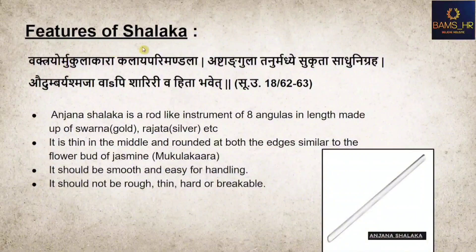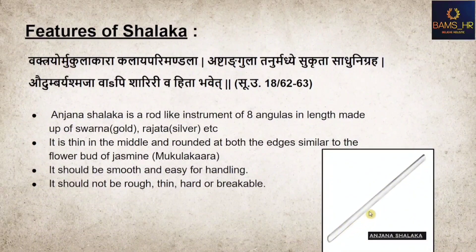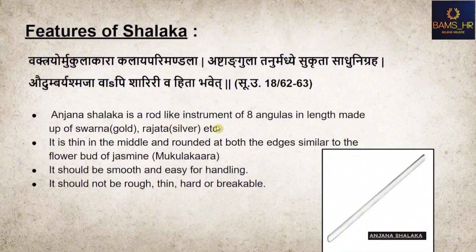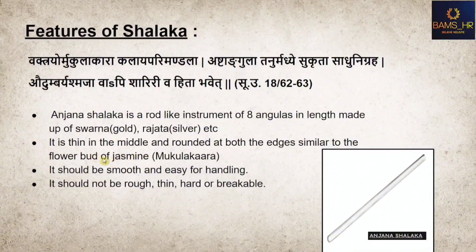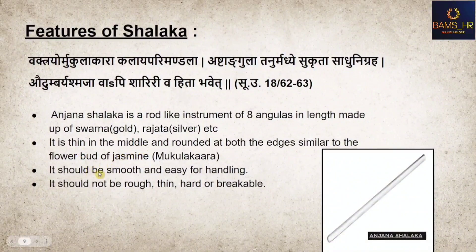The Anjana Shalaka is a rod-like instrument of eight Angula in length, made of Swarna, Raupya, etc. It is thin in the middle and rounded at both edges, similar to the flower bud of jasmine (Mukulakara). It should be smooth and easy to handle — not rough, hard, or breakable. Nowadays, a modified form is used as Anjana Shalaka for practical purposes.